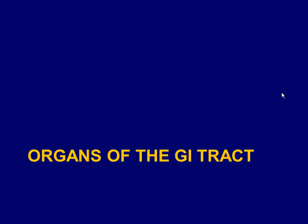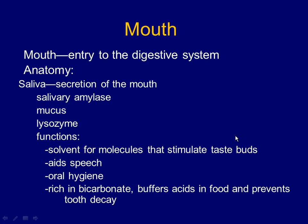Now we go one organ at a time. The best way to study the GI tract: look at one organ and learn four things about it — motility, secretions, digestion, and absorption. The mouth is the first organ, the entry to the digestive system. For saliva, that's a secretion. You don't even have to put food in your mouth — you can start secreting before any contact with food.